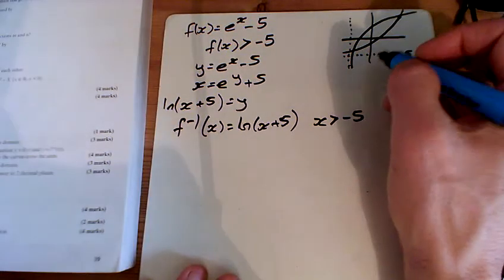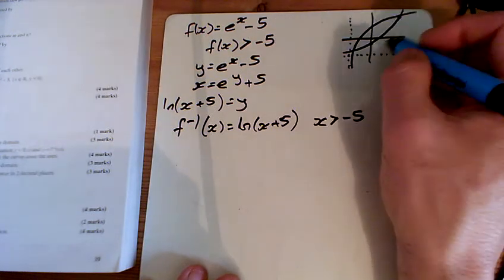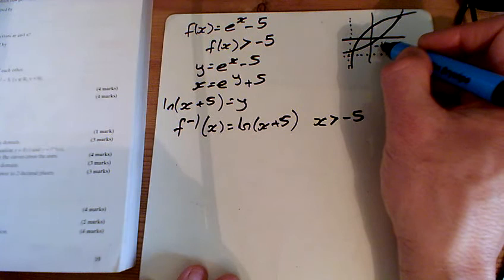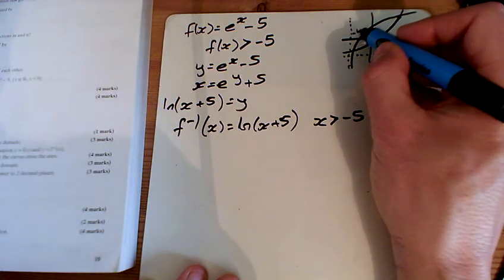I've got a couple of places I know. I mean, e to the 0 is 1, take away 5 is minus 4. So if that's minus 4, then it's crossing here at minus 4 as well.